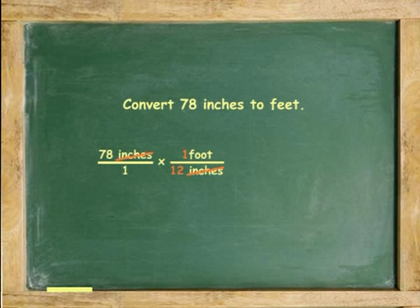Four: Cancel the name of the given units. Multiply and divide to get the answer. 78 times 1 is 78. 1 times 12 is 12. 78 divided by 12 equals 6.5 feet, which are the units left in the proportion.